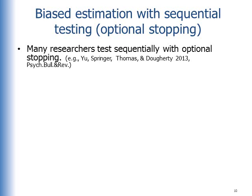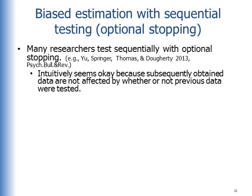Many researchers test sequentially with optional stopping. You collect some data, test the data to see if you can reject or accept the null. If you can't yet reject or accept, you collect some more data and test again. A lot of researchers, if you're getting close to rejecting or accepting, will try collecting some more data. This intuitively seems okay, because subsequently obtained data are not affected by whether or not the previous data were tested.